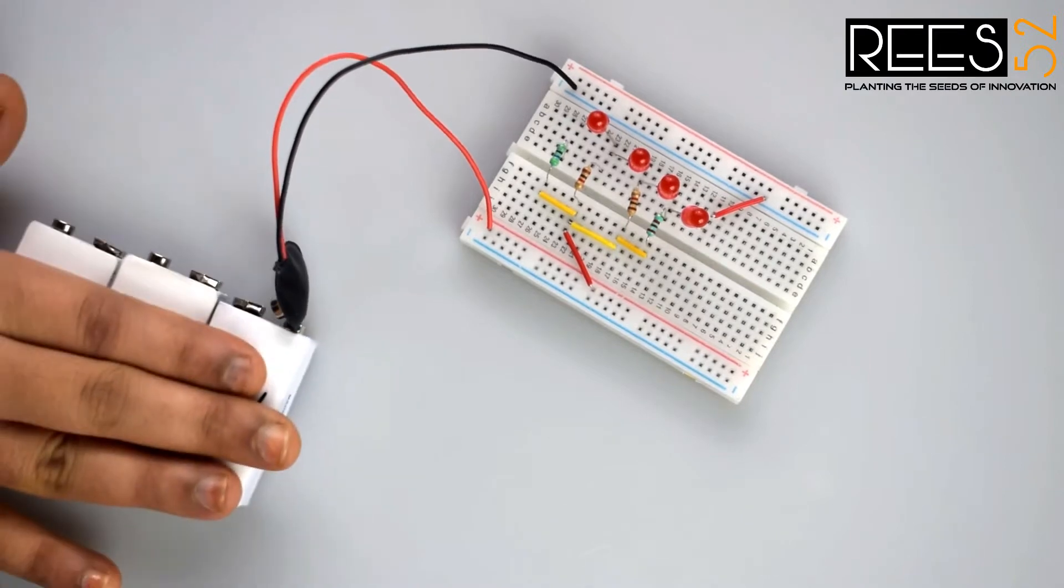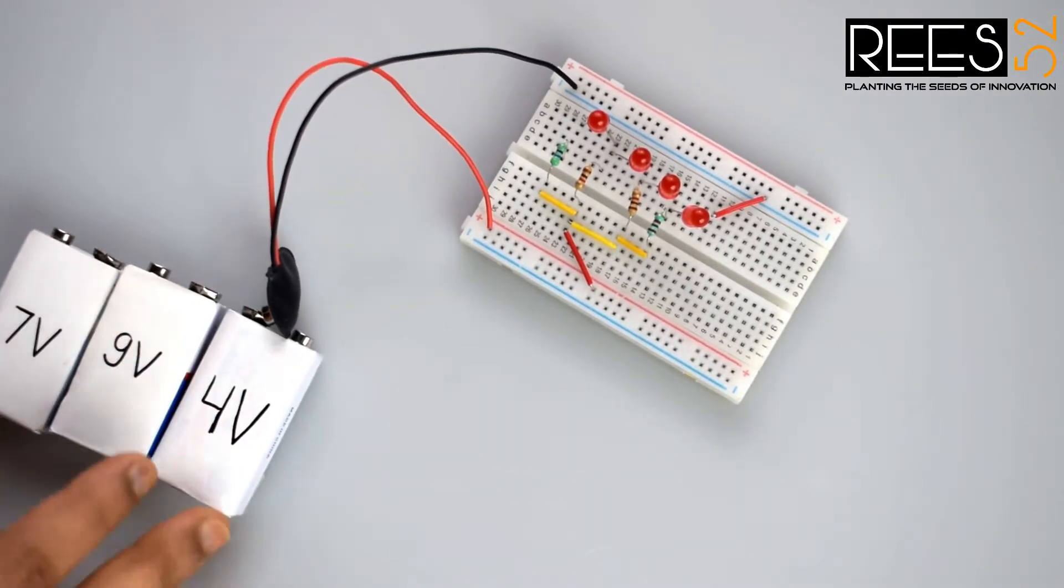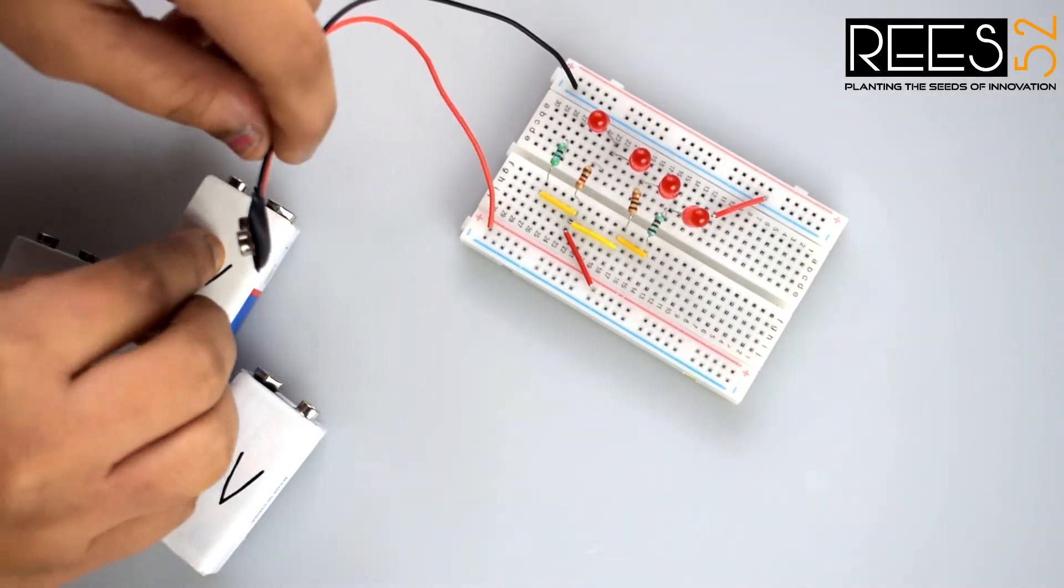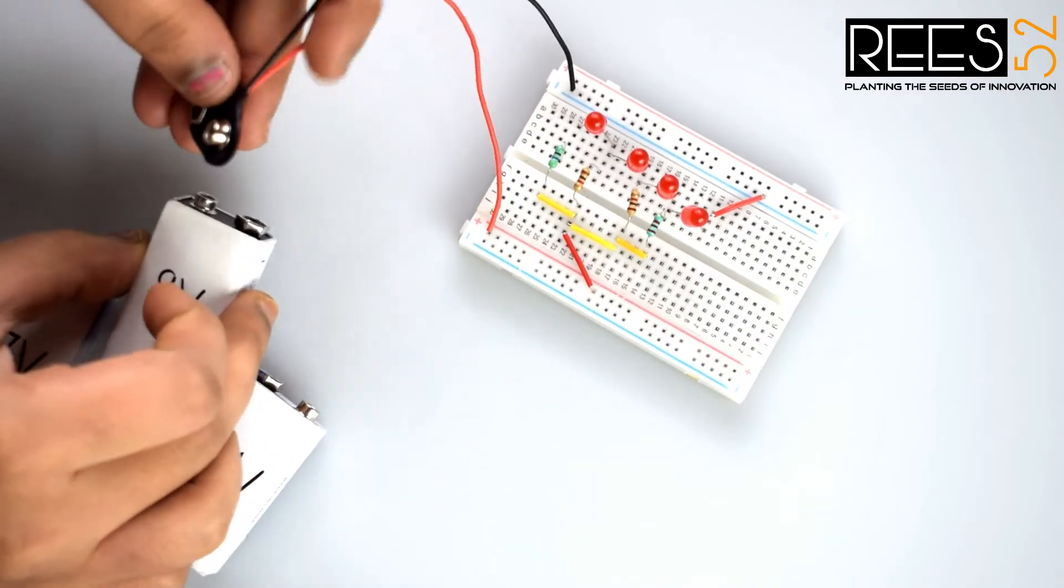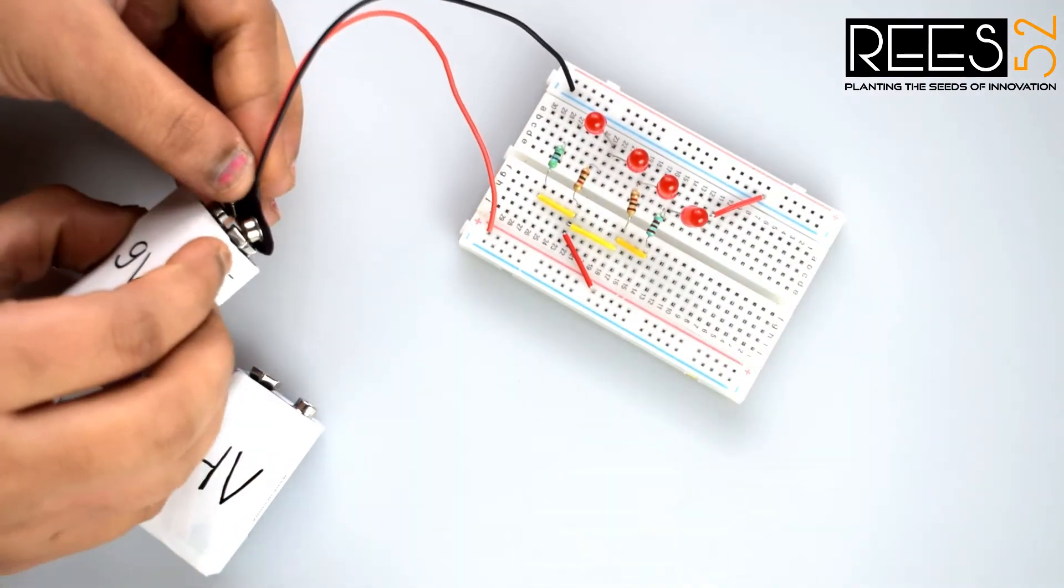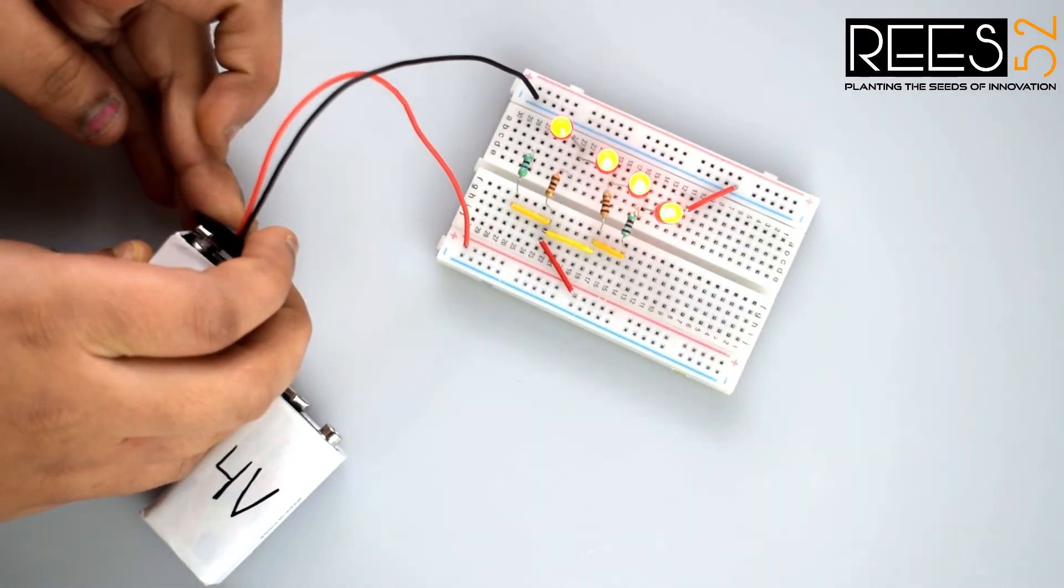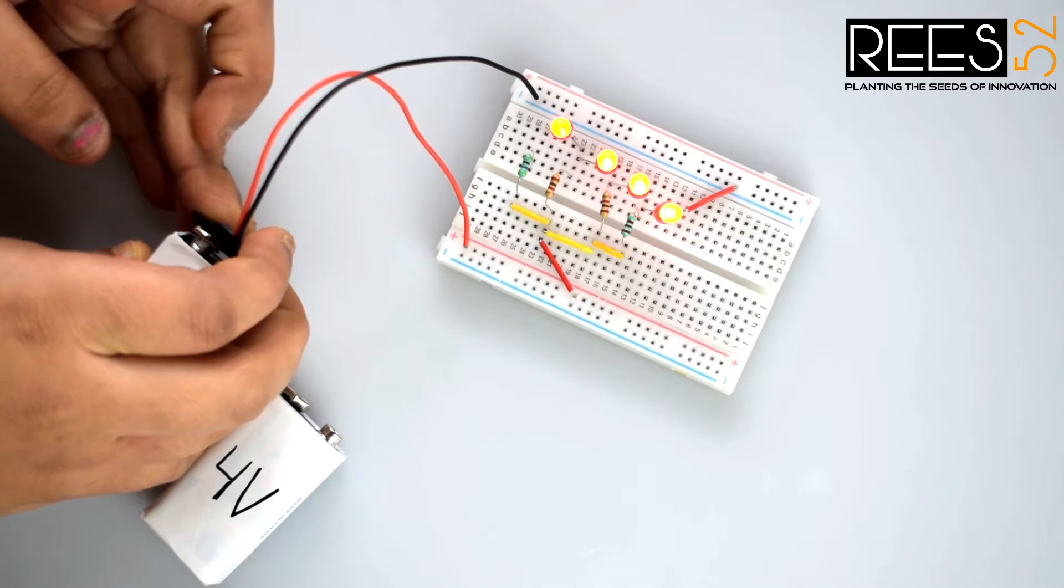Now connect all the batteries. So first of all, the 9V battery that is fully charged. You can see all the LEDs are glowing, level up to 4.